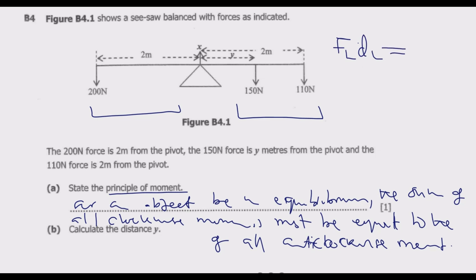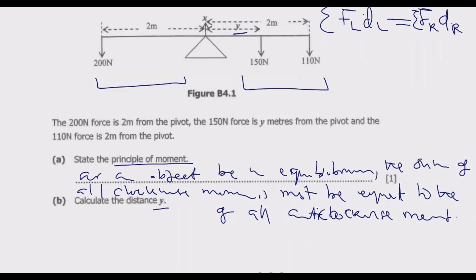In other words, the force on the left multiplied by the perpendicular distance to the left must equal the force on the right multiplied by the perpendicular distance to the right. So the summation of moments must balance. We sum the forces multiplied by their distances using this formula.